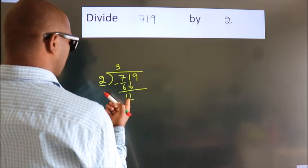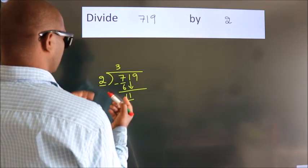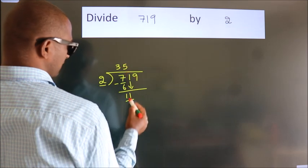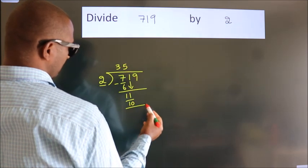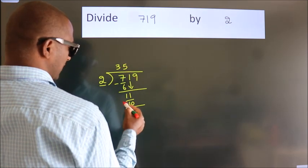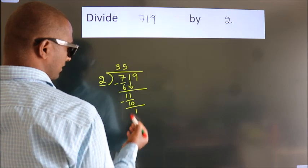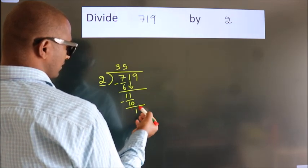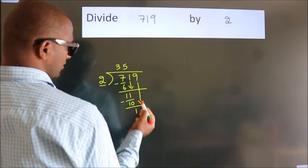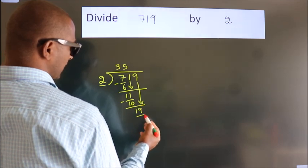A number close to 11 in the 2 table is 2 times 5, 10. Now we subtract and get 1. After this, bring down the beside number. 9 down, so 19.